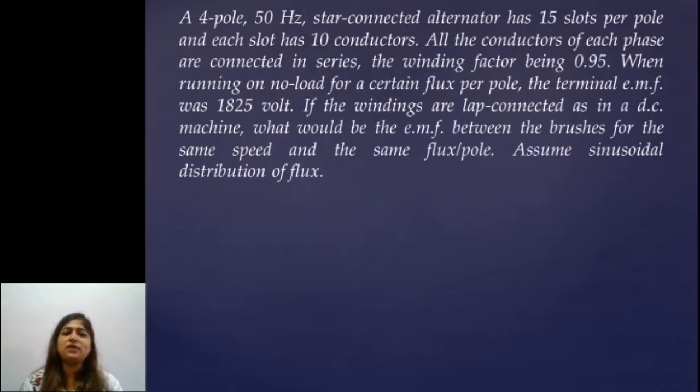A 4-pole 50 Hz star-connected alternator has 15 slots per pole and each slot has 10 conductors. All the conductors of each phase are connected in series, the winding factor being 0.95. Now winding factor, something different is given. Winding factor is nothing but Kw, which means Kp and Kd combinedly given as winding factor.